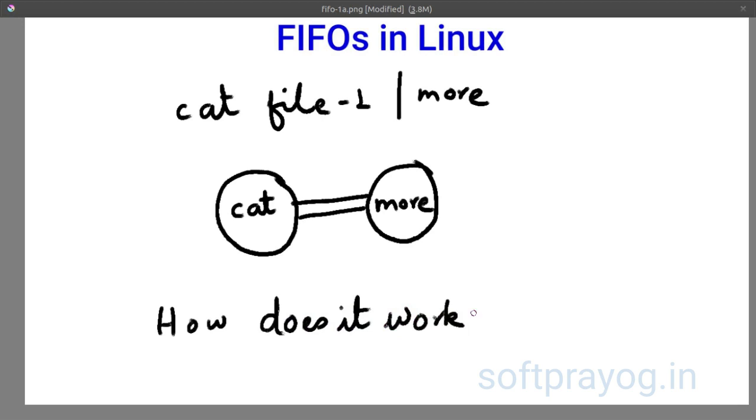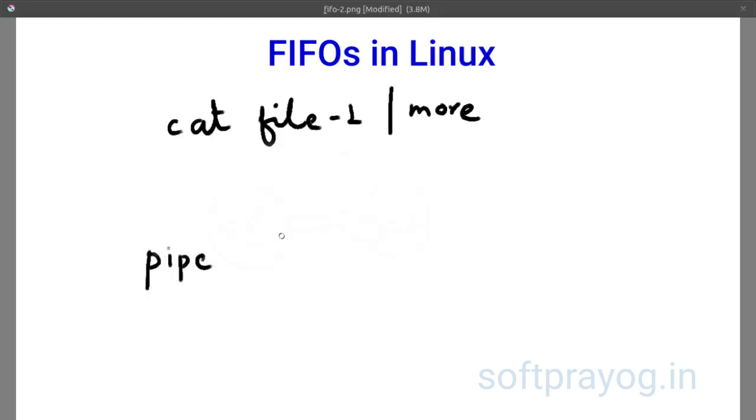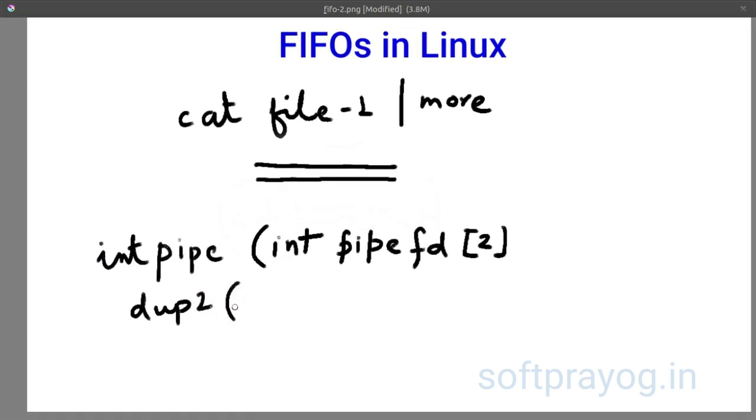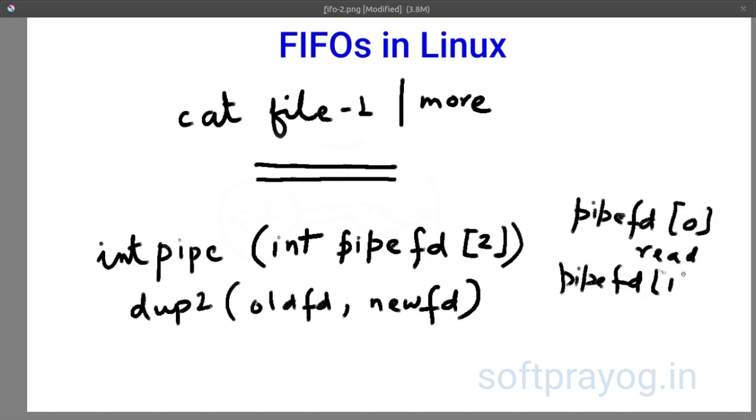How does it work? There is a pipe system call which makes a pipe and there is a dup2 system call which takes old fd and new fd. So what really happens is once you make a pipe system call it gives two file descriptors pipefd0 for read and pipefd1 for write.